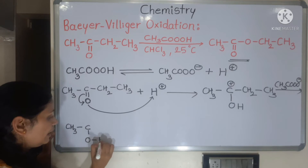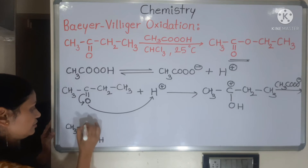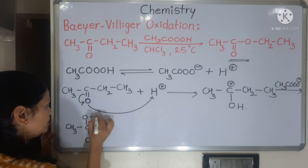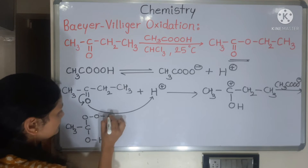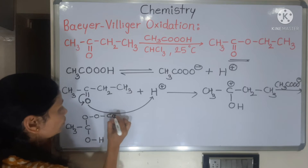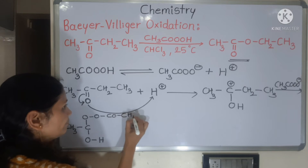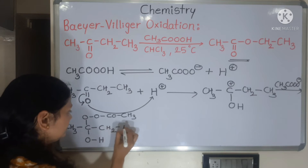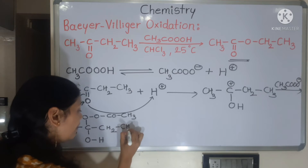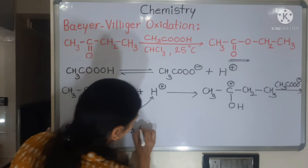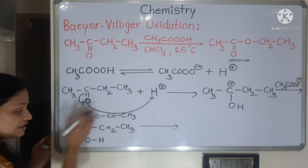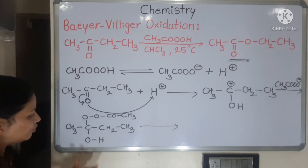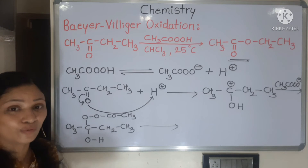The carbon was positive, so the peracid moiety — O-O-CO-CH3 — attacks that carbon. The remaining portion is the same, CH2CH3. Now here, similar to a pinacol rearrangement, an intramolecular rearrangement will occur within the same molecule. This is important because it determines where the ester will form.